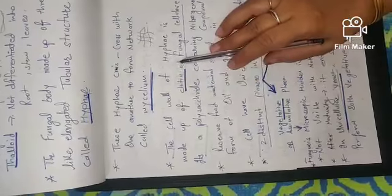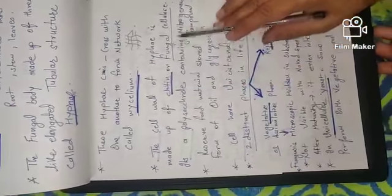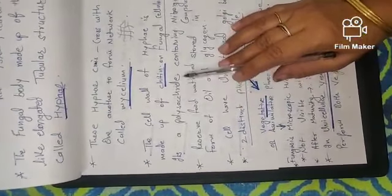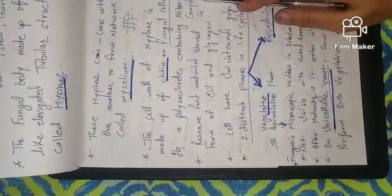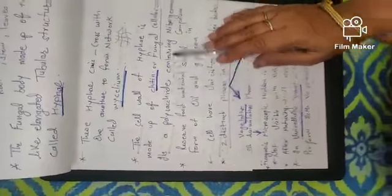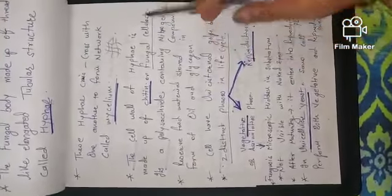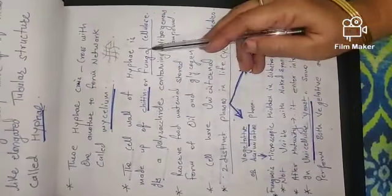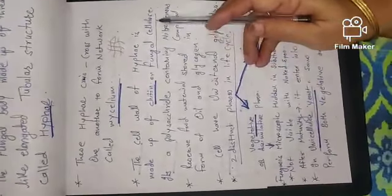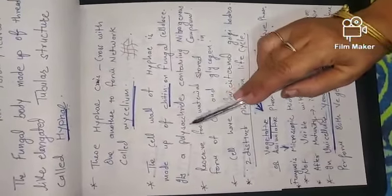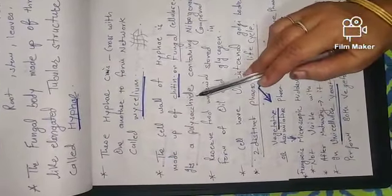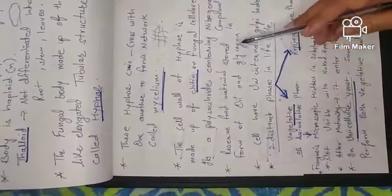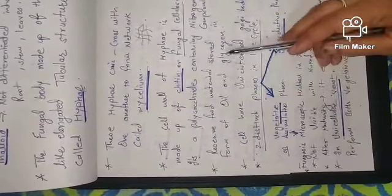Cell wall of the hypha is made up of chitin. Chitin means fungal cellulose, which is a polysaccharide containing nitrogenous compounds. Reserve food material is stored in the form of oil and glycogen.